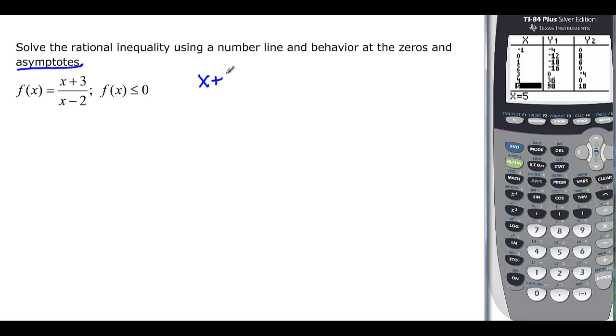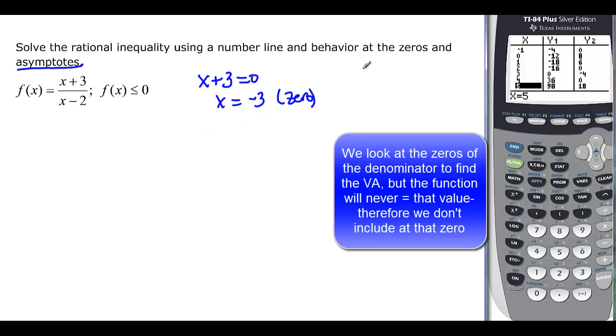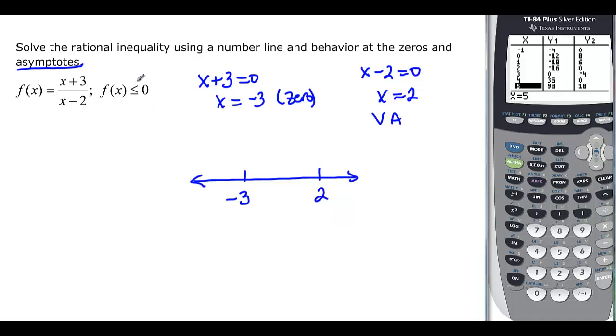Remember, factoring the top and then setting it equal to 0 will give me my x-intercept. So x is equal to negative 3 is a 0. And then I have x minus 2. So x is going to be equal to 2. And that one is going to be a vertical asymptote. So on my number line here, I have negative 3 and I have 2. My inequality says less than or equal to. So that means I can include my 0. So it might be this direction, but it might be this direction. But you never can include vertical asymptotes. So I have to have a parenthesis there on either side of it. Because it will never be 2. It will get close, never be there.